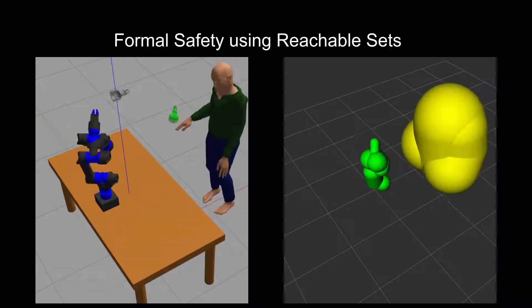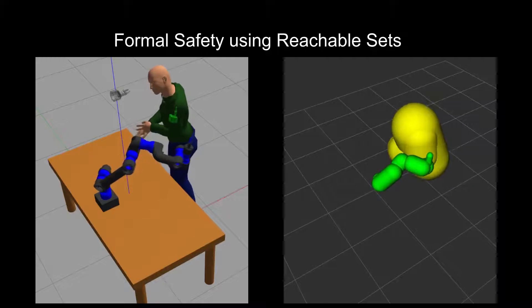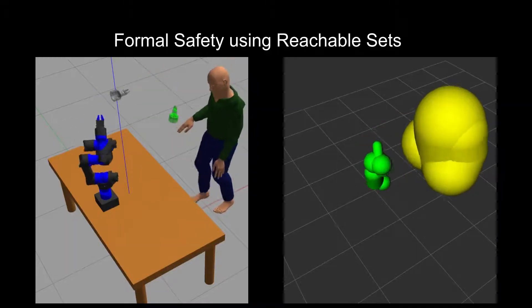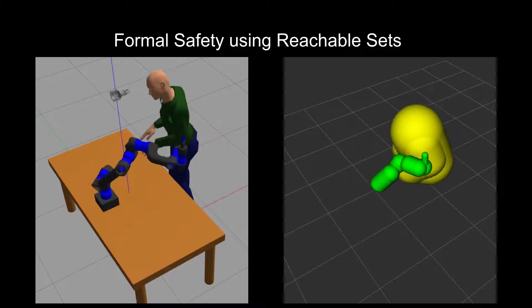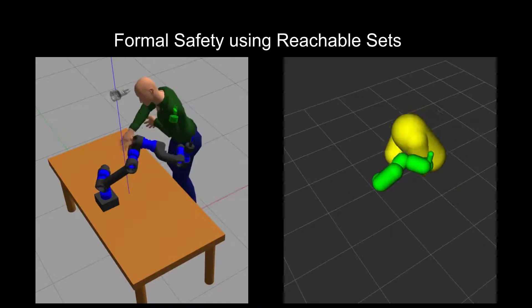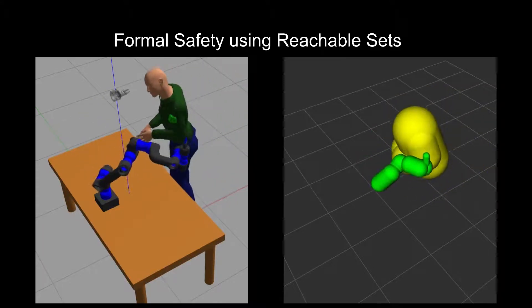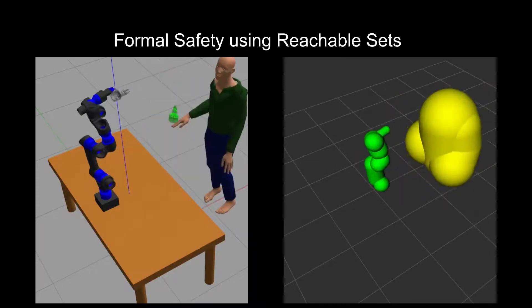The main mechanism of our verification is the reachability analysis. We determine the entire reachable set that the human and robot can occupy in a given time frame. The reachable set of the human upper body during task execution is shown here in yellow, and the robot set is shown in green. When these two reachable sets intersect, we bring the robot to a stop.